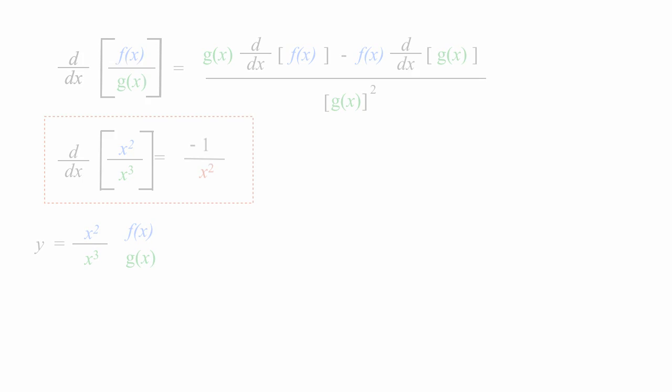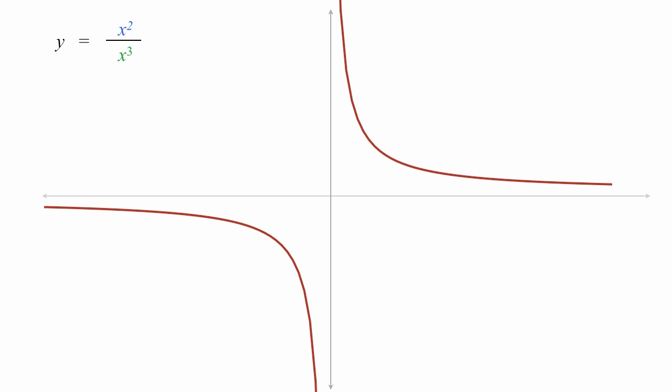The graph of y equals x squared divided by x cubed looks like this. And as you see, the tangent line is never positive. It's always downward sloping. Henceforth, the negative sign of the first derivative.